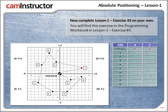For position 1, let's figure out the x and y coordinates. How many squares along the x-axis? 1, 2, 3, 4, 5 — so we're 6 squares along the x-axis. And along the y-axis: 1, 2. So for position 1, we have x positive 6 and y positive 2.